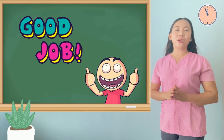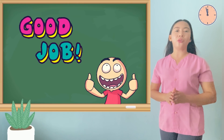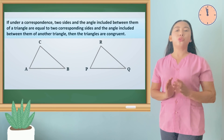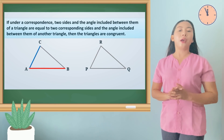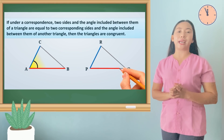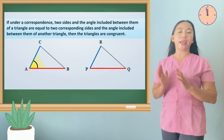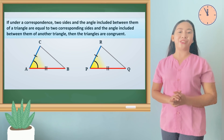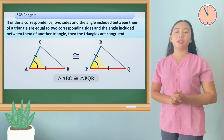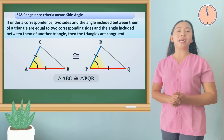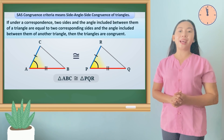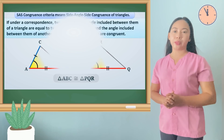At this point, we can now move on to the next triangle congruence postulate. It says that under correspondence, two sides and the angle included between them of a triangle are equal to two corresponding sides and the angle included between them of another triangle, then the triangles are congruent. This is known as the SAS or side-angle-side congruence postulate.